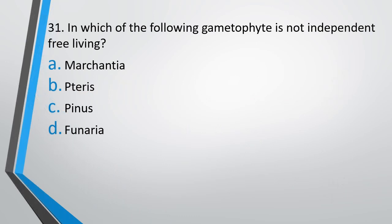Question number 31. In which of the following is the gametophyte not independent and free-living? Option A: Marchantia. Option B: Pteris. Option C: Pinus. Option D: Funaria. The correct answer is Option C, i.e., Pinus — its gametophyte is not an independent free-living organism.